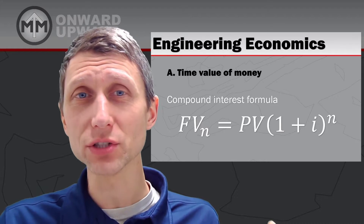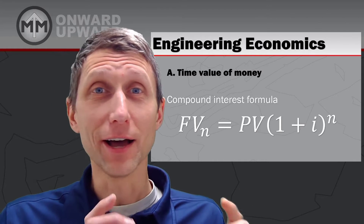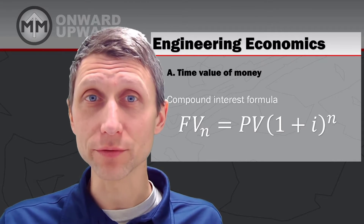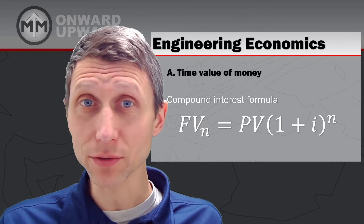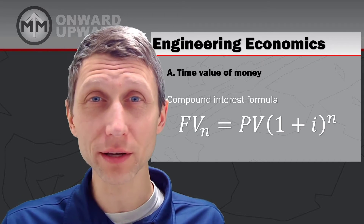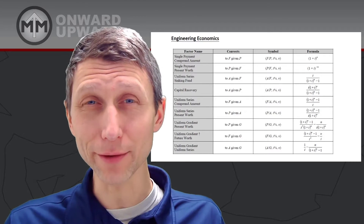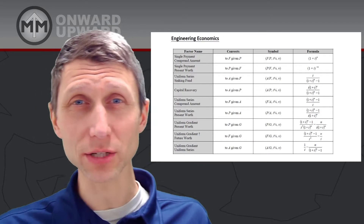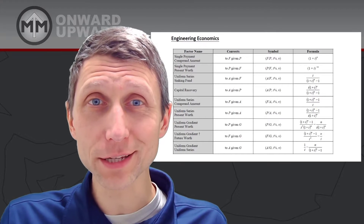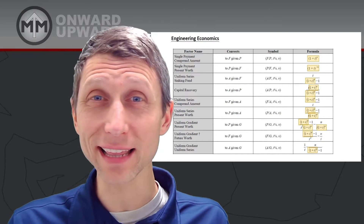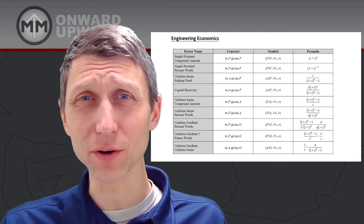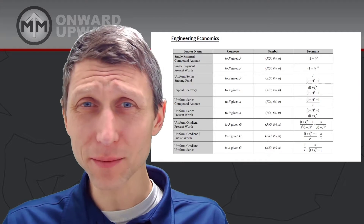This equation really defines engineering economics: the future value of an investment at some interest rate equals the present value times (1 + i)^n. This equation is so critical. If you look at all the equations in the FE reference handbook, you'll see that (1 + i)^n appears in some shape or form in all of them.